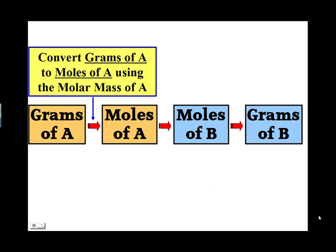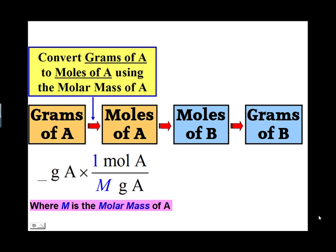We convert grams of A to moles of A using the molar mass of A. We take the grams of A and multiply it by a conversion factor with moles of A on top and grams of A on the bottom. We put a 1 by the mole, which we always do in a conversion factor involving moles and grams, and by the grams we write the molar mass, symbolized by the letter M.